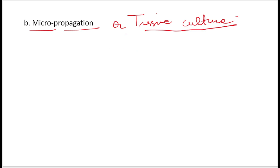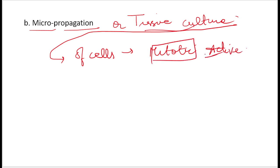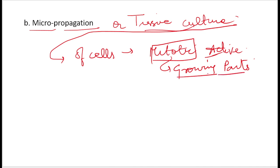In tissue culture, we culture cells that are mitotically active. Mitotically active cells are found only in the growing parts of the plant. So we take cells from growing parts, provide an appropriate culture medium, and give the appropriate conditions to grow these cells.